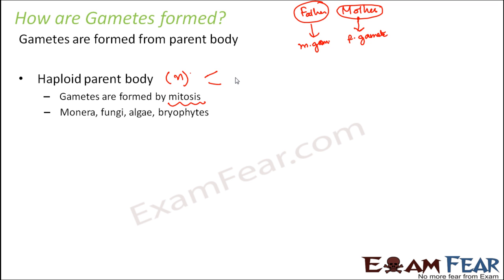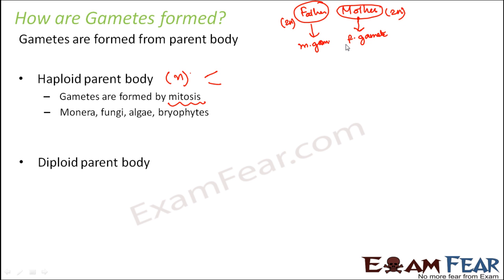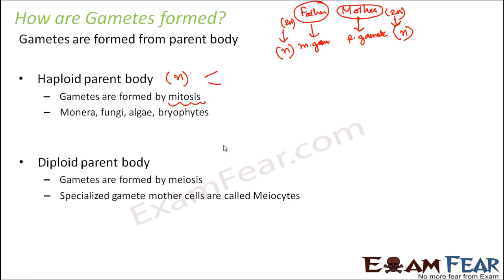This is seen in bryophytes, monera — that is bacteria, fungi, and some algae. In the second scenario, the parent body is diploid, for example in human beings. The diploid father has to produce a haploid gamete and the mother has to produce a haploid gamete. The chromosome number is getting reduced, so this happens by meiosis — the reductional division where the chromosome number gets reduced to half.